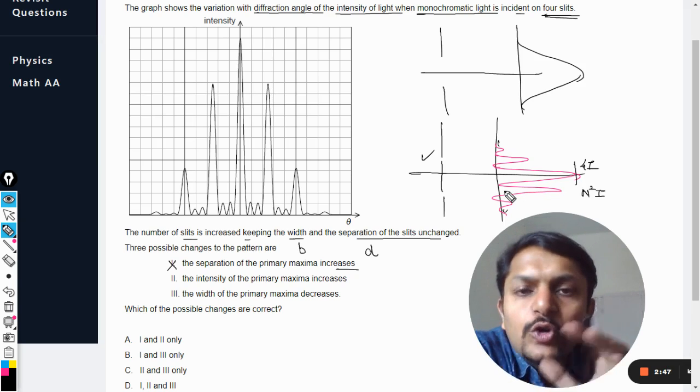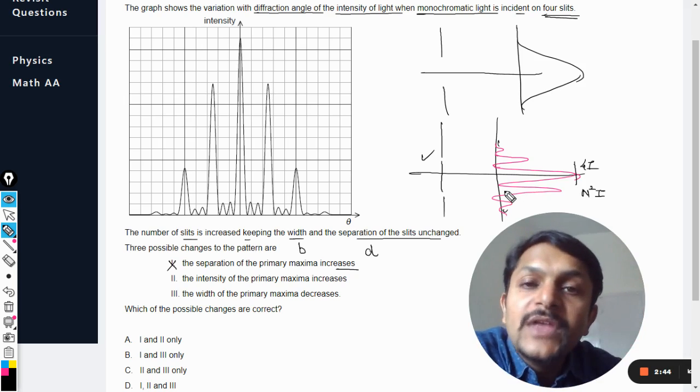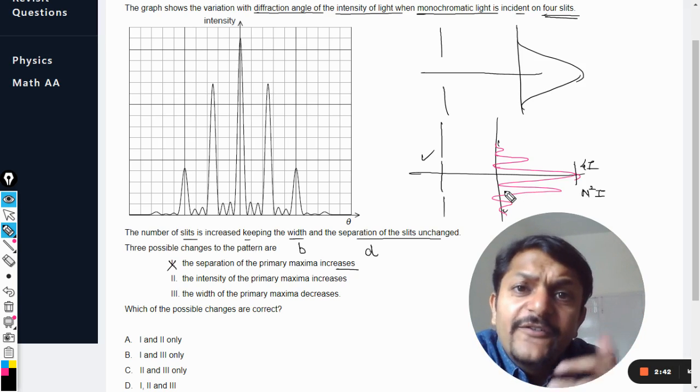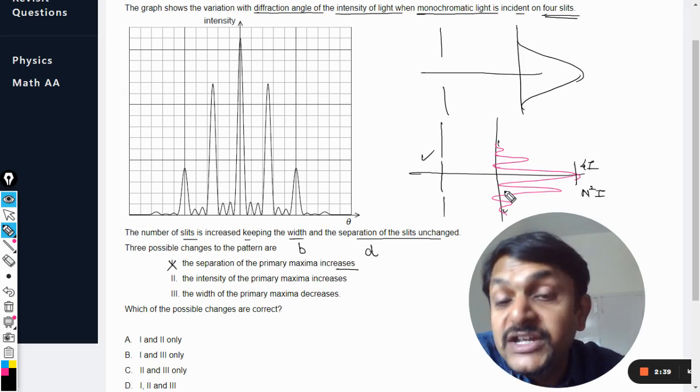These are two so this is equal to 4I₀. If there will be eight such slits, the total intensity will be eight square, that is 64I₀. If there are four slits, 4 raised to power 2 is 16, so the intensity will be 16I₀.